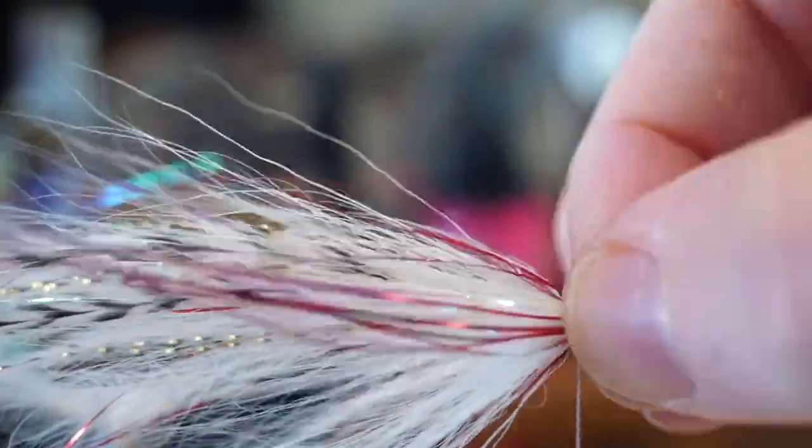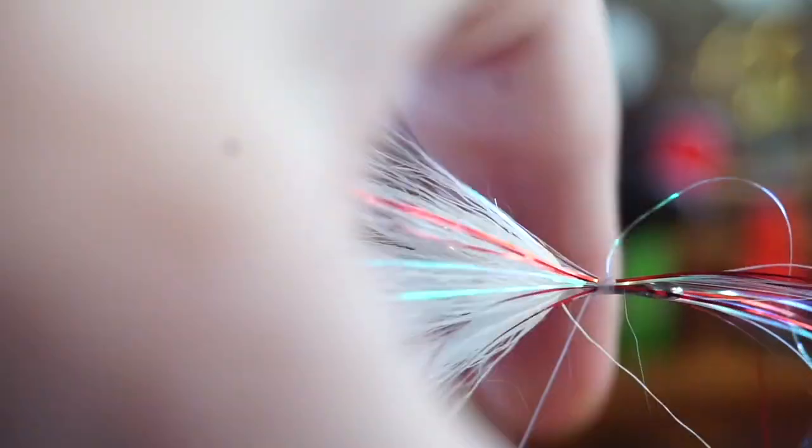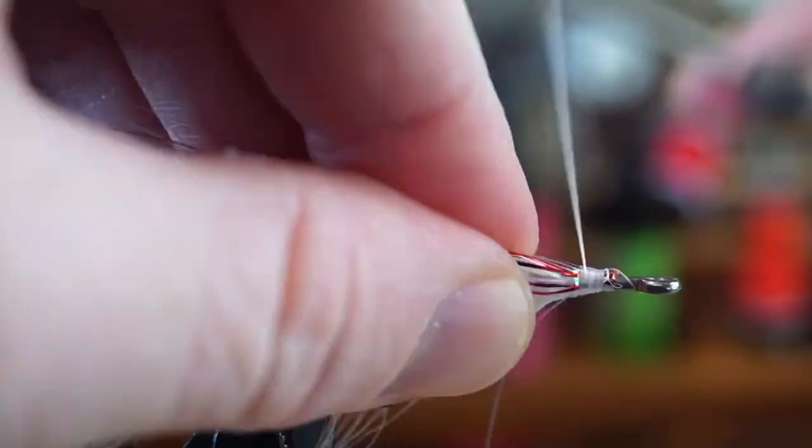All right, another bit of flashaboo now, tied in in the same way as last time. But this time pull the forward facing fibers up and over the back of the fly, to give more of a shimmer on top.